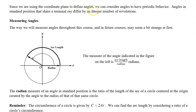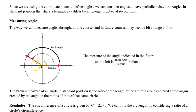Since we are using the coordinate plane to define angles, we can consider angles to have periodic behavior. Angles in standard position that share a terminal ray differ by an integer number of revolutions. For example, consider this blue angle in standard position — the terminal side is rotated from the positive x-axis counterclockwise. Compare the blue angle to this red angle, also in standard position, which has the same terminal side. However, the red angle is much bigger because we arrive at the terminal side by rotating counterclockwise all the way around, past the positive x-axis, and then finally arriving at that terminal side.